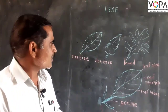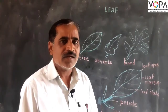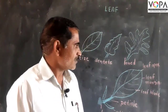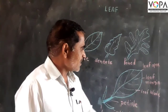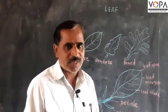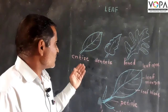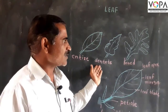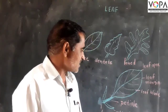The leaf apex can be rounded or tapering. The edge of the leaf is called the leaf margin. Leaf margins are of three types: entire leaf margins, dented leaf margins, or lobed leaf margins.